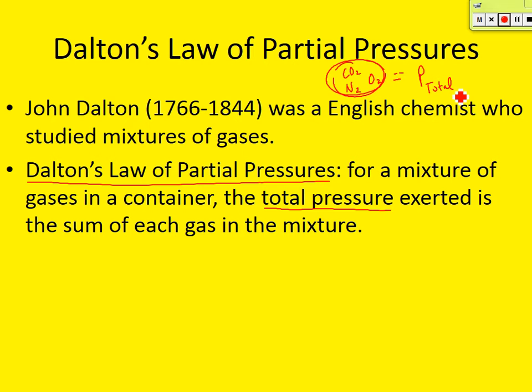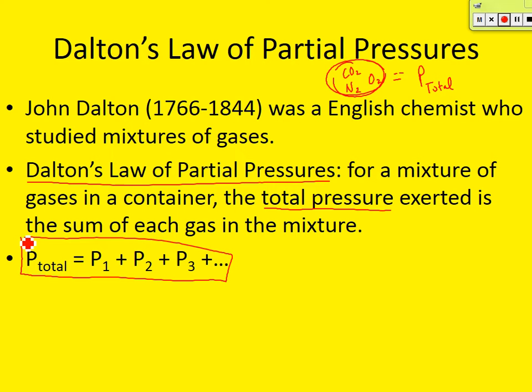So if you put it into an equation, here's what it says: pressure total in the system is equal to the partial pressures of each gas — pressure of gas number one, plus pressure of gas number two, plus pressure of gas number three. And if there's more, you just keep adding them up. To find the total pressure, we simply take the sum of all the different gases in that system.